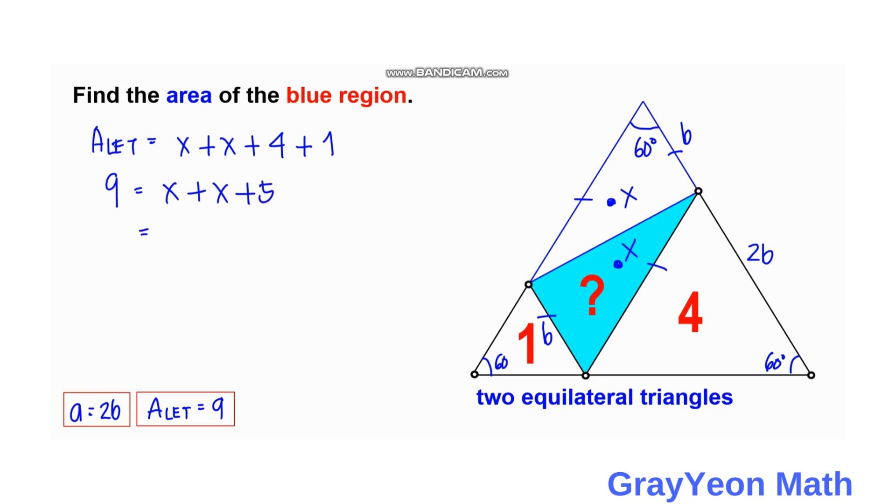So 2x equals 9 minus 5. 2x equals 4, and if you divide both sides by 2, you will have x equals 2 square units. And that is our answer.